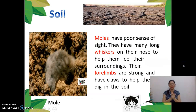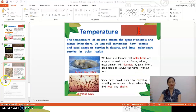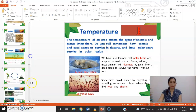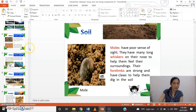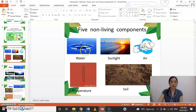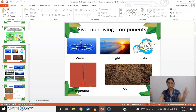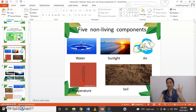I hope you understand our topic for today. What are the five non-living components? Number one is water, number two is sunlight, number three is air, number four is temperature, and number five is soil. Let's say them one more time: the five non-living components are water, sunlight, air, temperature, and soil.